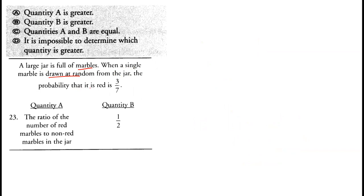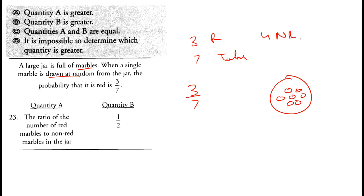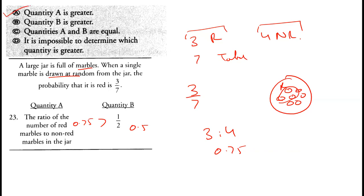A large jar of marbles has a probability of drawing a red marble of 3 over 7. This means there are 3 red marbles out of 7 total, so there are 4 non-red marbles. The ratio of red to non-red marbles is 3 to 4, which equals 0.75. Since 0.75 is greater than 0.5, quantity A is greater. Option A is correct.